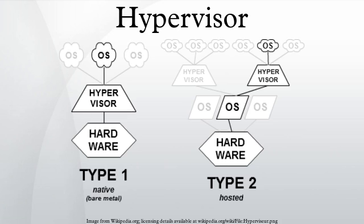A hypervisor, or virtual machine monitor, is a piece of computer software, firmware, or hardware that creates and runs virtual machines. A computer on which a hypervisor is running one or more virtual machines is defined as a host machine. Each virtual machine is called a guest machine. The hypervisor presents the guest operating systems with a virtual operating platform and manages the execution of the guest operating systems. Multiple instances of a variety of operating systems may share the virtualized hardware resources.